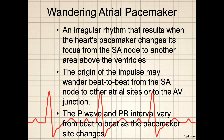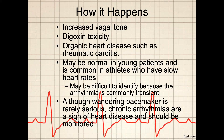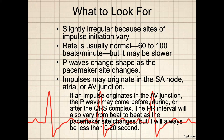The P-wave and PR interval vary from beat-to-beat as the pacemaker site changes. This may happen because of increased vagal tone, digoxin toxicity, or organic heart disease such as rheumatic carditis, and may be normal in young patients and is common in athletes who have a slow heart rate. It may be difficult to identify because the arrhythmia is commonly transient. Although a wandering pacemaker is rarely serious, chronic arrhythmias are a sign of heart disease and should be monitored. Even something as innocent as a wandering pacemaker is problematic if the patient is symptomatic. On your EKG strip, look for slightly irregular beats because the sites of impulse initiation vary. The rate is usually normal, between 60 and 100 beats per minute, but it may be slower.